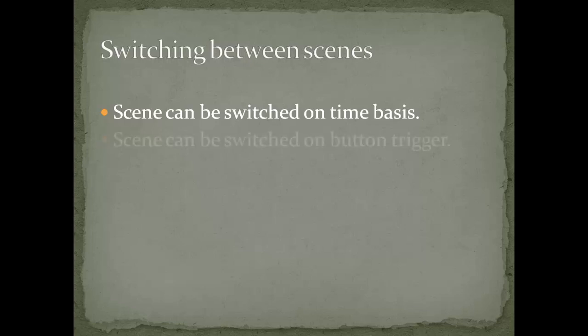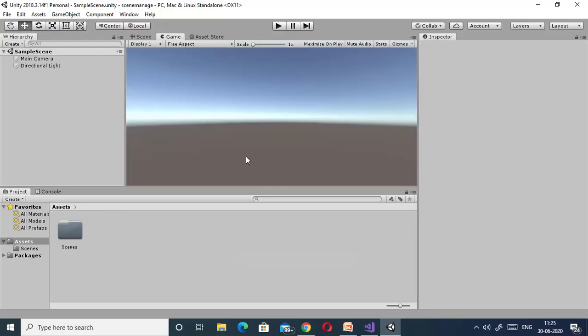The next method is that a scene can be switched on a button trigger. There may be a button available for changing the levels, and whenever we want to change our level, we can trigger the button and the scene will be changed. We will discuss scene switching in both ways in Unity.